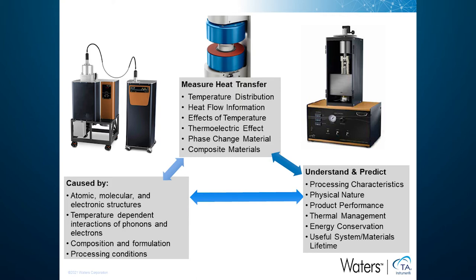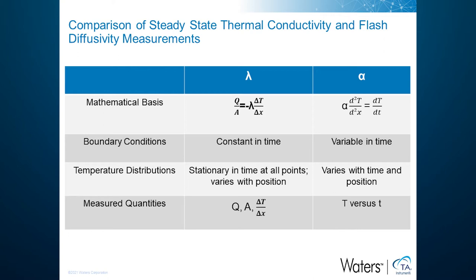There is a wide range in the thermal conductivity of various engineering materials, caused by different atomic, molecular, and electronic structures, temperature-dependent interactions of phonons and electrons, composition, formulation, and processing conditions. Accurate measurement of thermal conductivity will help us understand and predict processing characteristics, physical nature, product performance, optimized thermal management, safety, and longevity of systems and components. What is the difference between the steady-state method and the transient flash diffusivity method? Let us look at this comparison table. First, the mathematical basis is different.